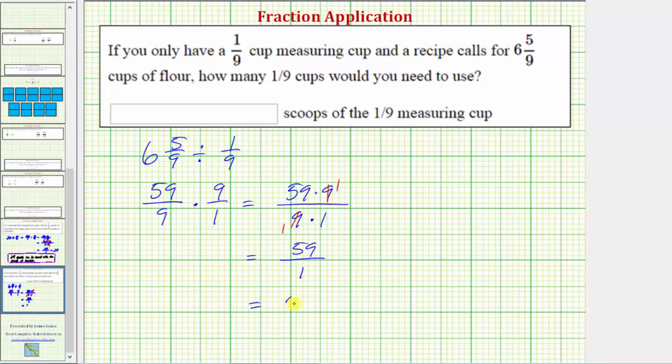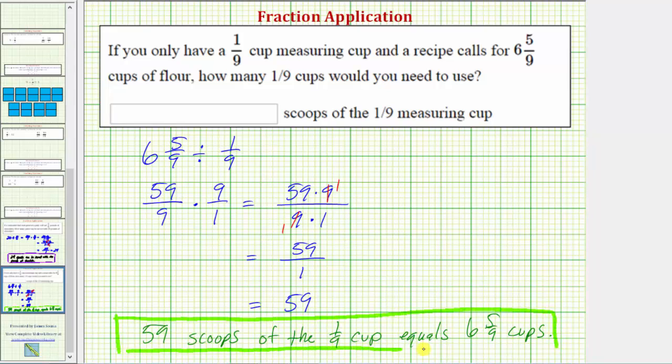So this tells us fifty-nine scoops of the one-ninth cup equals six and five-ninth cups. I hope you found this helpful.